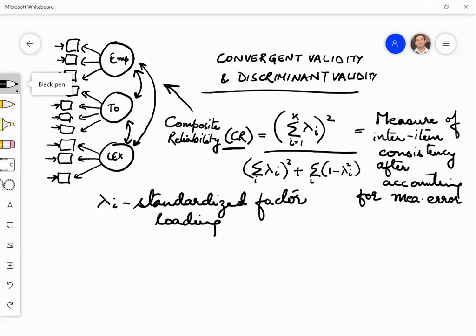If we have, for example, let us take this example of EMP. Let us say it had loadings of 0.6, 0.7, and 0.8.